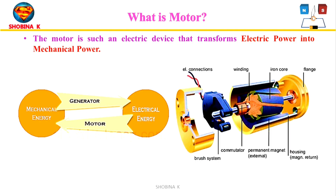A motor is an electric device that transforms electric power into mechanical power. The working of these motors depends on the interaction of the field at the stator with the flux generated by the current armature windings at the rotor. The input to the motor can be provided according to their types: DC motors use a battery and rectifiers, while AC motors use an AC power source, inverter, AC generator, induction generator, or synchronous generator.